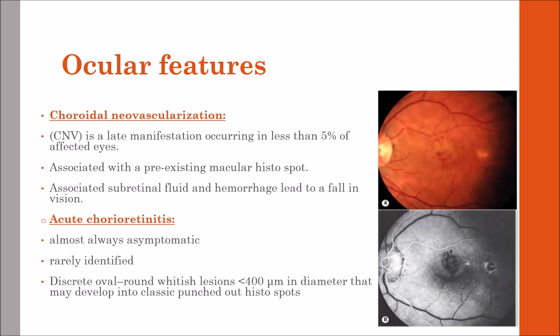There is also choroidal neovascularization, as already discussed. It is a late manifestation occurring in less than 5% of affected eyes and is usually associated with a pre-existing macular histospot. It is also associated with subretinal fluid and hemorrhage, leading to falls in visual acuity. Acute chorioretinitis is almost always asymptomatic and rarely identified, but discrete round whitish lesions less than 400 microns in diameter that may develop into classic punched-out histospots have been described.